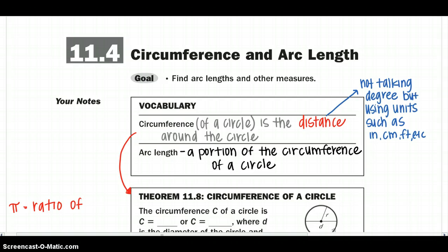So if you remember, the circumference of a circle is the distance around the circle. So before now, we've been talking about the arc length in a degree measure, but now we're going to find the distance. So we're going to use units such as inches, centimeters, feet, millimeters, etc.